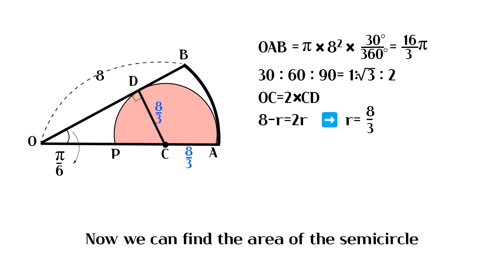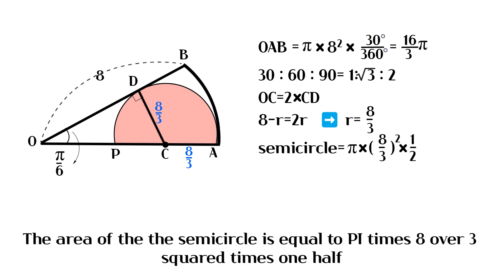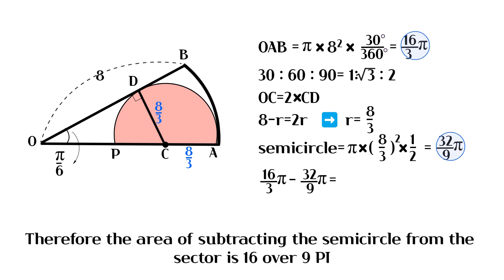Now we can find the area of the semicircle. The area of the semicircle is equal to pi times (8 over 3) squared times one half. Therefore, the area of subtracting the semicircle from the sector is 16 over 9 pi.